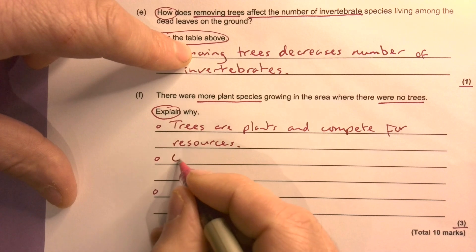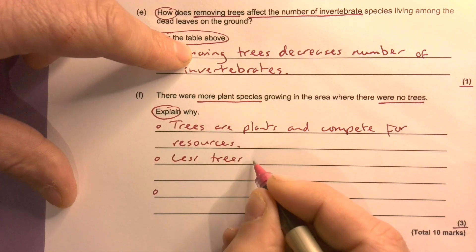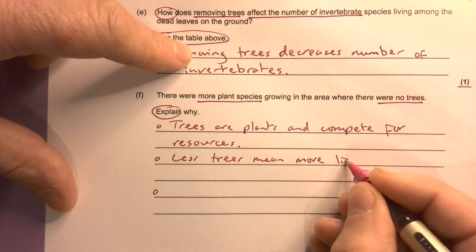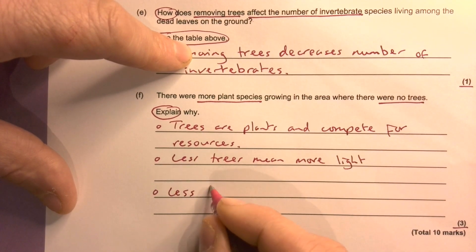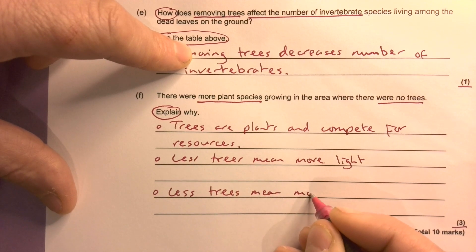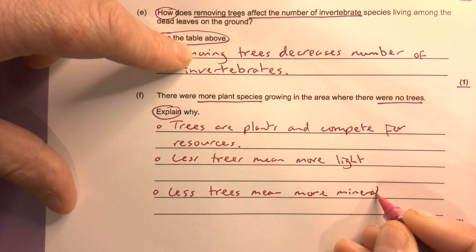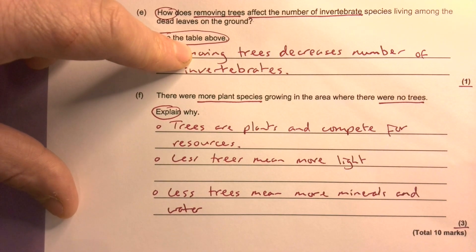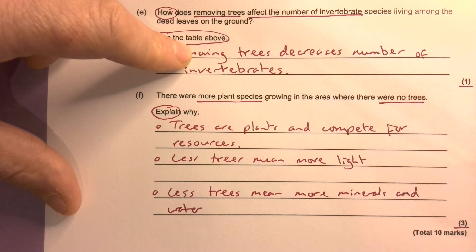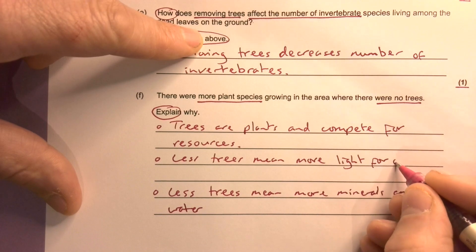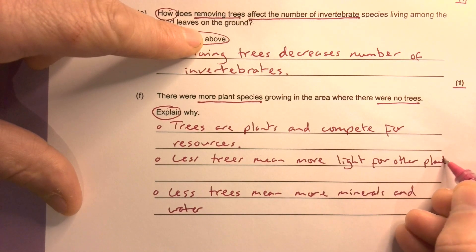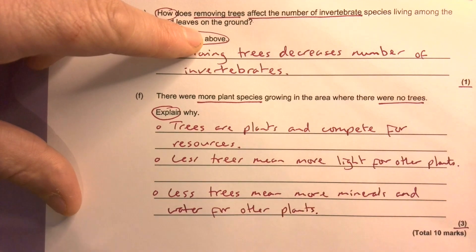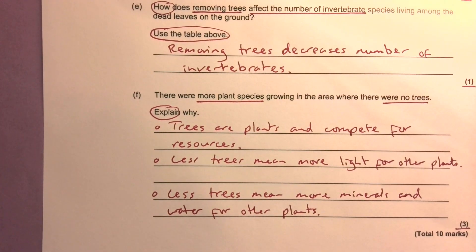Less trees means more light. Less trees means more minerals and water. Less trees means more light for other plants. Less trees means more minerals and water for other plants. You could also write 'space' — there's more space for other plants. The key point is that the trees themselves compete.